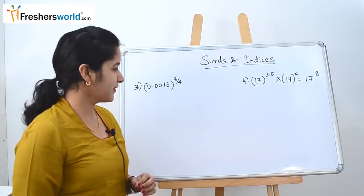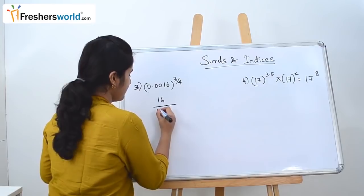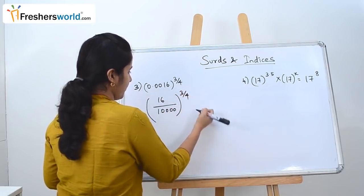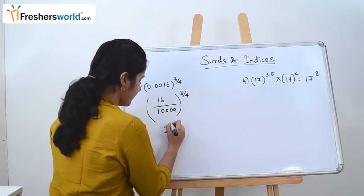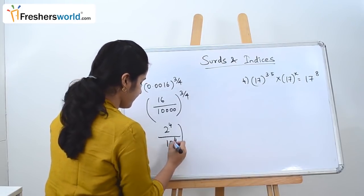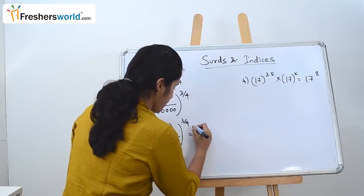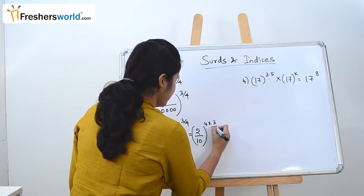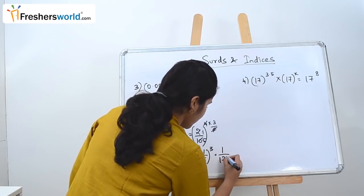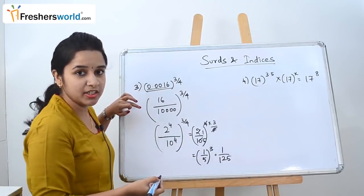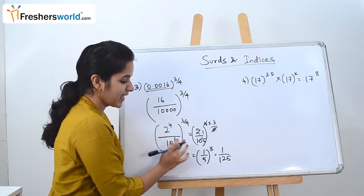The next sum is 0.0016 the whole power 3 by 4. This can be written as 16 divided by 10,000, the whole power 3 by 4. Now 16 is nothing but 2 power 4, and 10,000 is nothing but 10 power 4, so we have 2 power 4 by 10 power 4, the whole power 3 by 4. These have common powers, so it can be written as 2 by 10, the whole power 4 into 3 by 4. The 4s cancel, giving 2 by 10, the whole power 3. Since 2 by 10 is 1 by 5, the answer is 1 by 5 the whole power 3, which is 1 by 125.